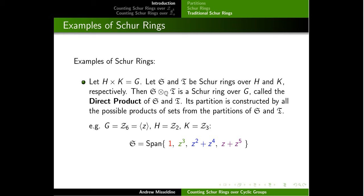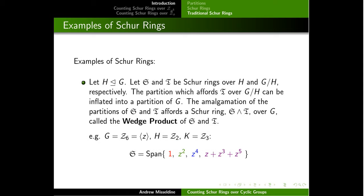As another example, we can form Schur rings using the direct product structure of the group. If G factors as H times K and you have a Schur ring over H and a Schur ring over K, then you can take the tensor product of those two things, and that'll form a Schur ring over the direct product — we call this the direct product Schur ring. So if you take ℤ₆, take the subgroups ℤ₂ and ℤ₃, and take a Schur ring over each, taking all the possible products gives you this direct product Schur ring.